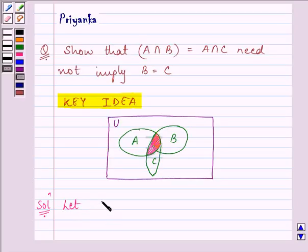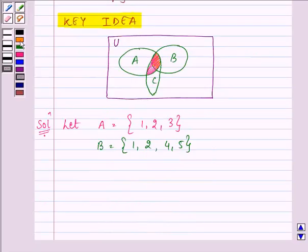Now here, in the solution, let us assume, let set A have elements 1, 2, 3. Let set B have elements, let's say 1, 2, because few of the elements are common in A and B, and let it be 4, 5. And set C may be having elements which are present in A also and some elements are present in B also. So, let it be 1, 2, 4, and let's say 6, 7.